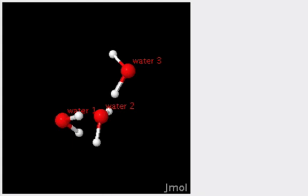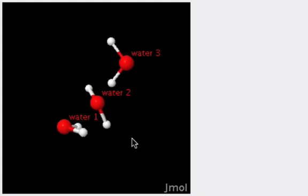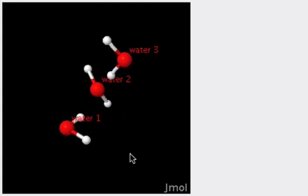In order to achieve that, we need to rotate water 2 about 40 degrees, and now the lone pair on water 2 is perfectly aligned with the OH bond in water 3. This is the optimal alignment to form a hydrogen bond between waters 2 and 3.